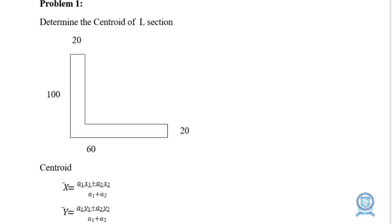The general formula for calculating the centroidal x̄ and ȳ values is: x̄ = (a1·x1 + a2·x2) / (a1 + a2), where a1 is the area of section 1, x1 is the centroidal x distance of the lower rectangle, a2 is the area of the second rectangle, and x2 is the centroidal x distance of the top rectangle. This can also be written as x̄ = Σ(a·x) / Σa and ȳ = Σ(a·y) / Σa.